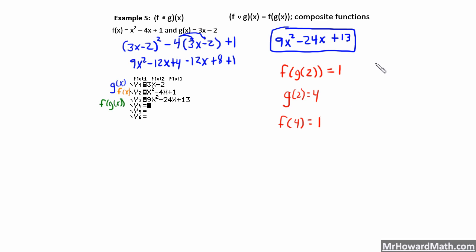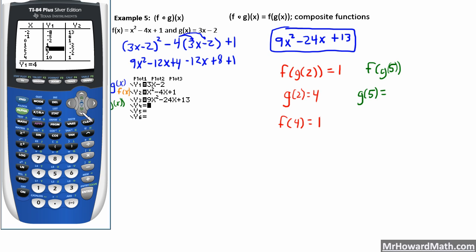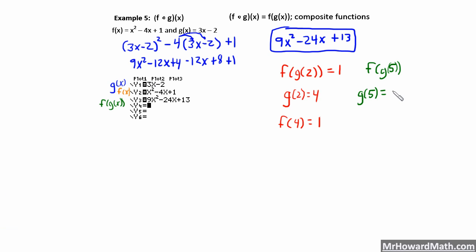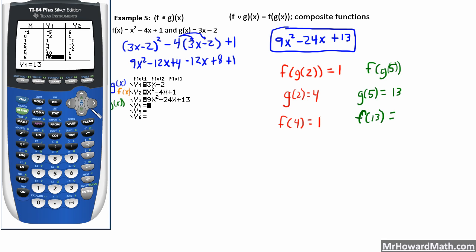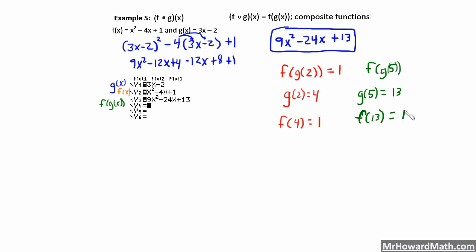Let's use another example. Let's say we were asked to find f of g of 5. The first thing we would do is take g of 5. Our g of x function is in y1, so we go to when x is 5 — that's 13. So algebraically, the next thing we would do is take f of 13. We jump down to 13, and remember our y2 is our f of x function, so when x is 13, our y2 is 118. So f of g of 5 is equal to 118. We should be able to go into our composite function in y3 and find when x is 5, and the result should be 118.